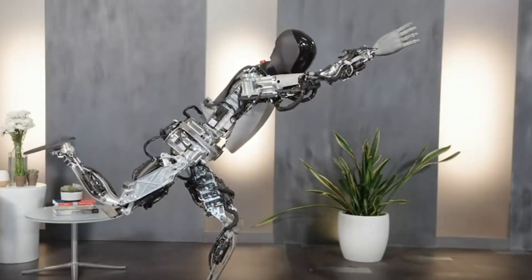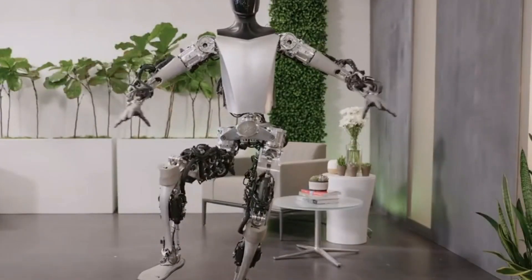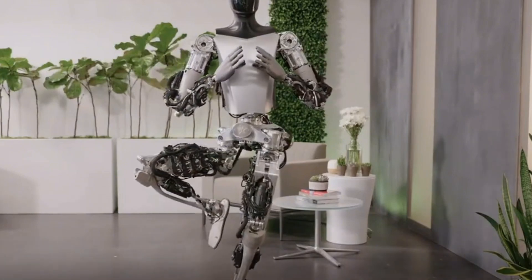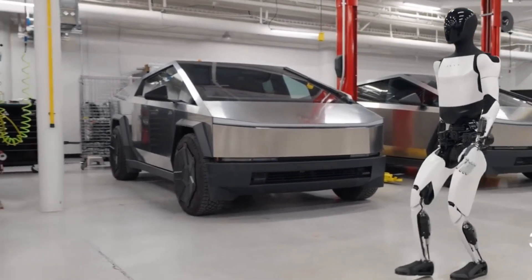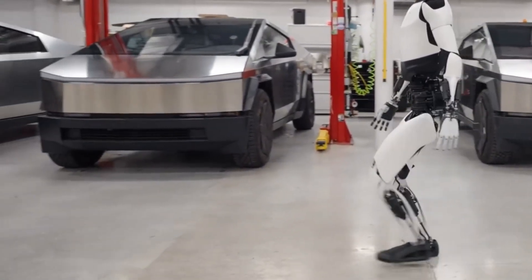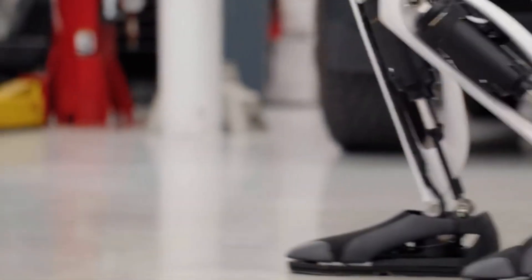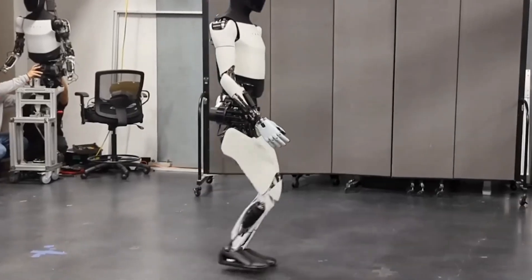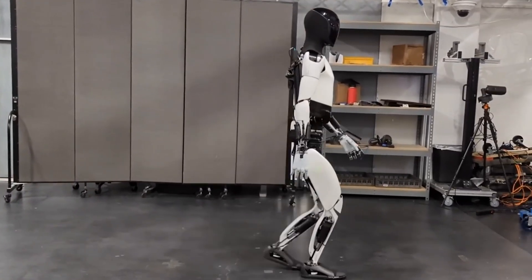Number 2. Improved Mobility. Imagine Optimus strolling gracefully, just like a person. Its legs are now lighter and stronger, complete with special toes that help maintain excellent balance. This means Optimus can effortlessly navigate various places, much like you do when taking a leisurely walk. The enhanced mobility ensures Optimus moves with ease and agility.